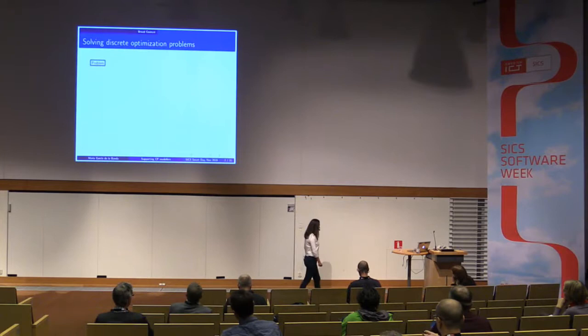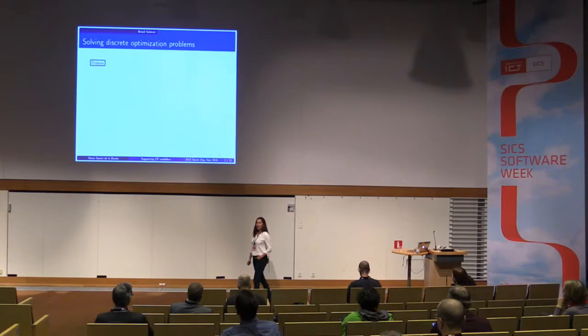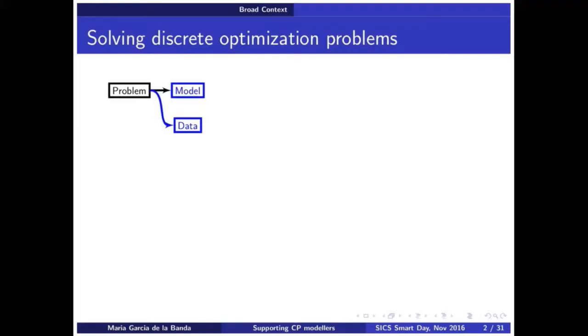Okay, so this morning Peter has already talked about the holy grail, right? How do you solve an optimization problem? It's really easy in theory. You model it, you have a problem and you have a model, and then you get some data, and your job is done.